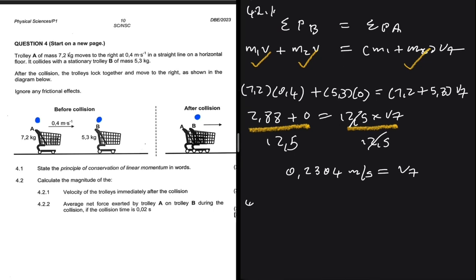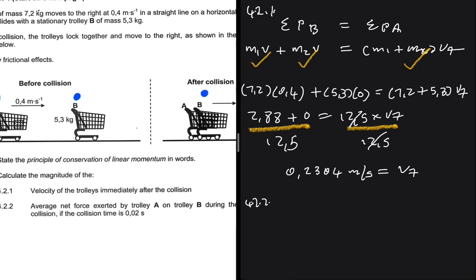And 4.2.2, let's calculate the magnitude of the average net force exerted by trolley A on trolley B during the collision, if the collision time is 0.2, actually 0.02 seconds.